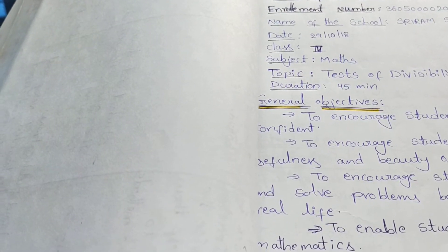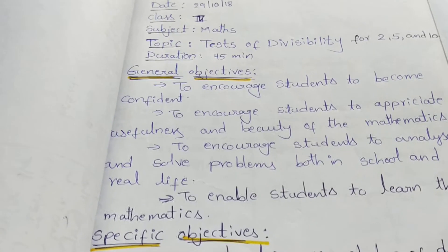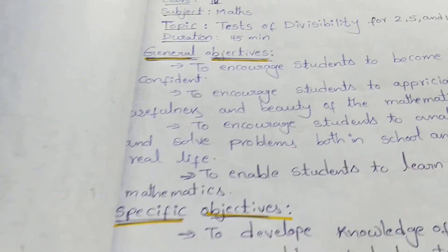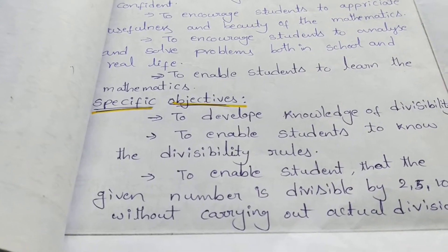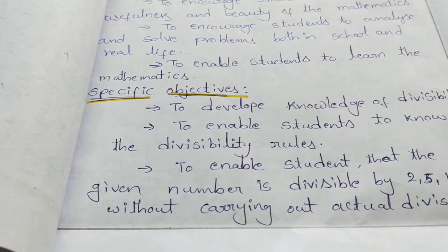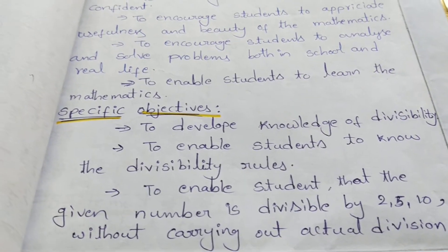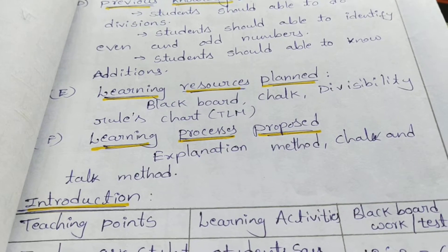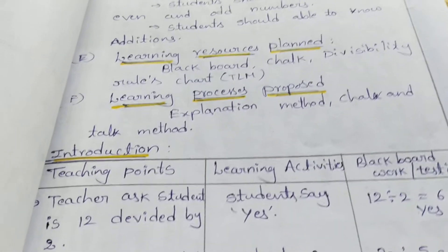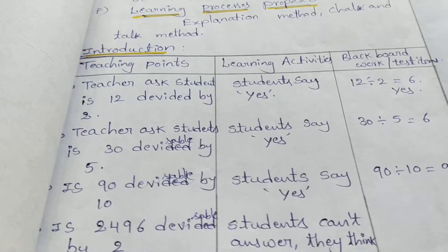This is a mass lesson plan for Class 4. The topic is Test of Divisibility for 2, 5, and 10. The plan covers general objectives, specific objectives, previous knowledge, learning resources, and the learning process, including the introduction phase with teacher and student activities.